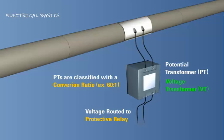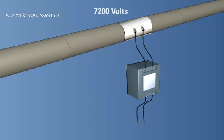For example, a 60 to 1 ratio scales the primary voltage down to 120 volts.